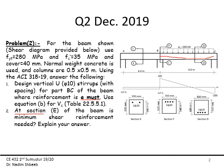The second part asks: at section E of the beam, is minimum shear reinforcement needed? You have to tell me whether av,minimum is needed or not, and explain why. That explanation counts as your answer.